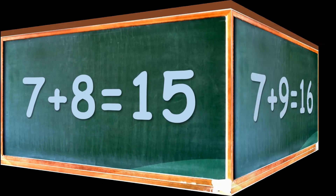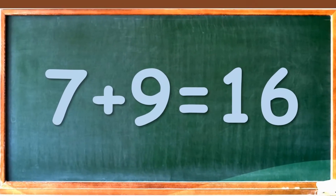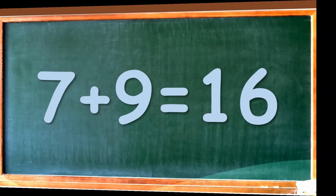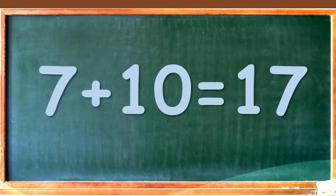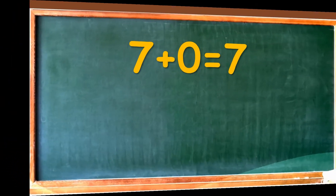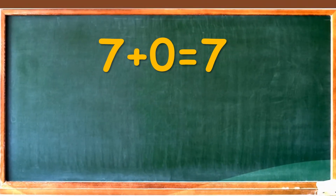7 plus 9 is equal to 16, 7 plus 10 is equal to 17. Let us repeat.